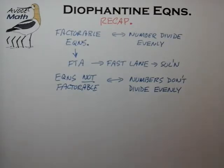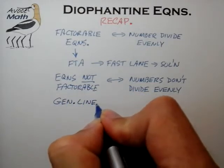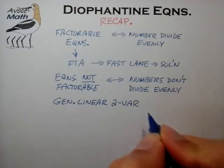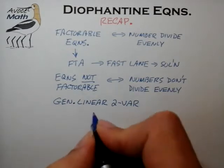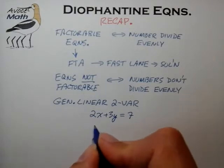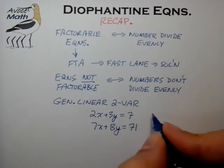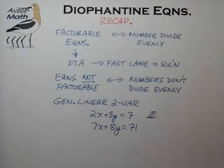In terms of equations that are not factorable, the equation that comes to mind — and the one you're most likely to encounter in the AMC and AIME level of testing — is what I refer to as the general linear two-variable equation. Two examples of that would be 2x + 3y = 7, or 7x + 13y = 71. We generally are trying to solve these types of equations in all integers, positive and negative. These equations are inherently not factorable, and that's important to bear in mind.